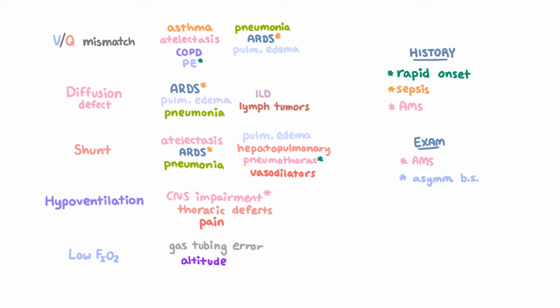Asymmetric breath sounds, which you would see in a pneumothorax or a pleural effusion, wheezing, which can be seen in asthma, COPD, or angioedema.